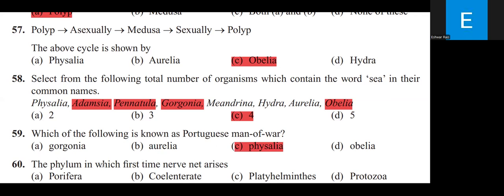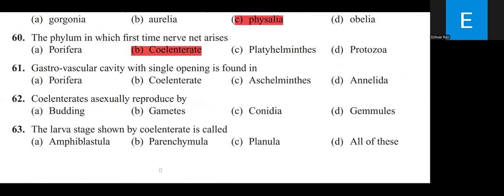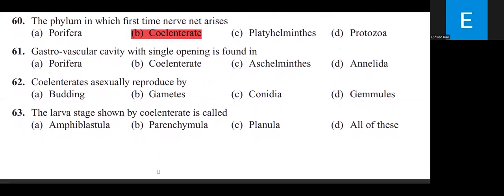The phylum in which a nerve net first arises is Coelenterata (Cnidaria). Gastrovascular cavity with a single opening is also found in Coelenterata. The answer for both questions is Coelenterata.